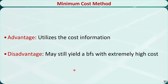The advantage of using the minimum cost method is that it utilizes the cost information, and the generated basic feasible solution may be closer to the optimal solution. But this method requires a little bit more computational effort than the northwest corner method. Sometimes it may still generate a basic feasible solution with extremely high cost, which is far away from the optimal solution. That's how we find a basic feasible solution to the balanced transportation problem using the minimum cost method.